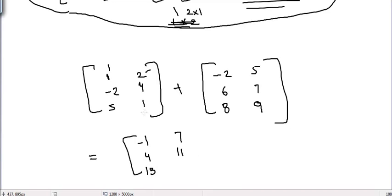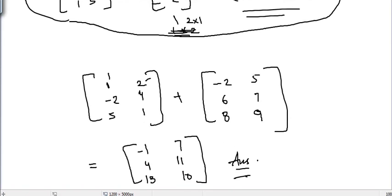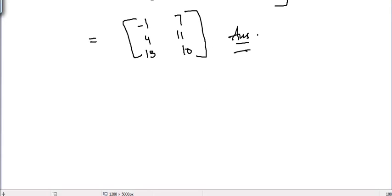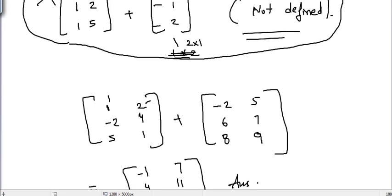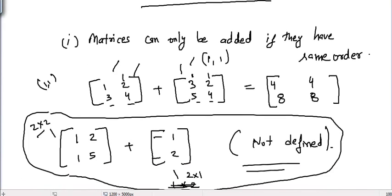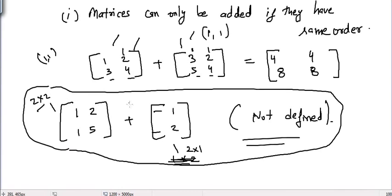So that's the answer. In this video we learned how to add two matrices — it's pretty simple. We also learned that if the matrices are of different order, we cannot add them. See you guys in the next video.